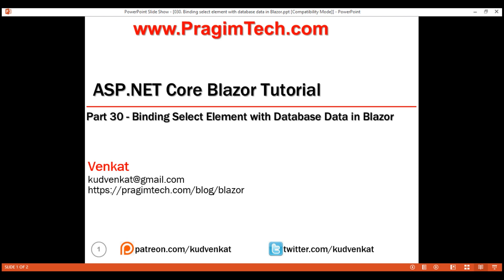This is part 30 of the Blazor tutorial. In this video, we'll discuss how to retrieve data from a database table and then bind the data to a drop-down list. Let's understand this with an example.